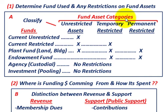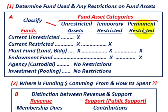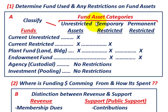We have these fund asset categories to work with. We're going to have unrestricted assets, temporarily restricted assets, and permanently restricted assets — three different classifications. When talking about restrictions, we're stipulating either internally or a third-party contributor or donor stipulates exactly how the assets or money should be spent on resources they contribute.